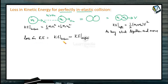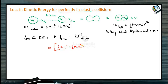Loss in kinetic energy means kinetic energy before collision minus the kinetic energy after collision. Kinetic energy before collision is more than kinetic energy after collision, so the answer will be positive. Kinetic energy before collision is half of m1 u1 squared plus half of m2 u2 squared, and kinetic energy after collision is half of m1 plus m2 into v squared.